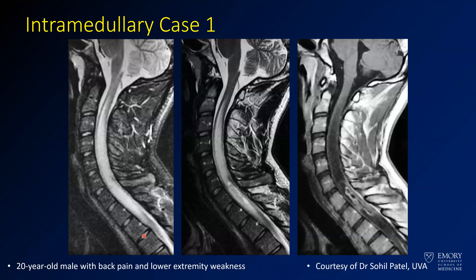Here we have a case — an intramedullary lesion in a 20-year-old having back pain and lower extremity weakness. This case is from Dr. Patel at UVA. On the T2 fat sat, you see the cord becomes very bright in the mid-cervical spine, almost as bright as CSF, and you really lose the definition of the cord there. On post-contrast, at the inferior margin you have this irregularly enhancing mass with ill-defined margins. When we have mass-like enhancement, we have to think about tumors — and this is a case of an astrocytoma.